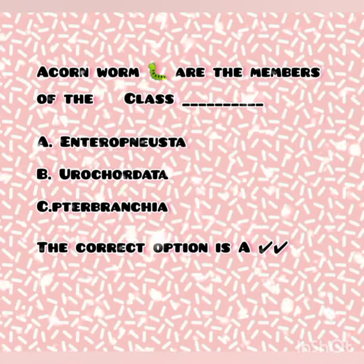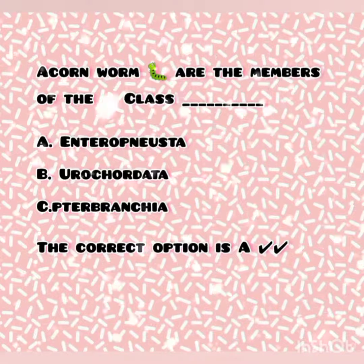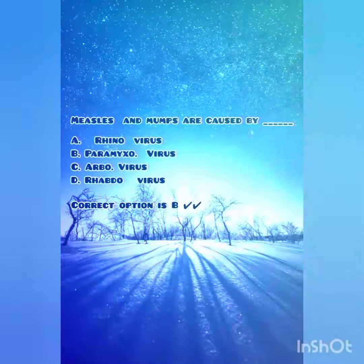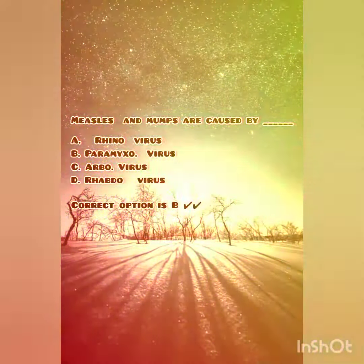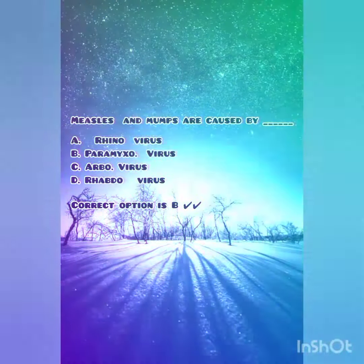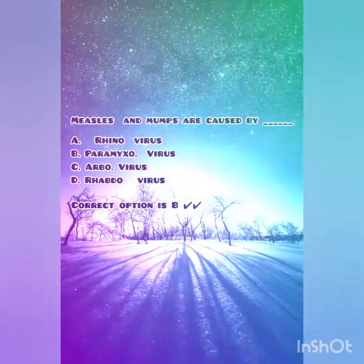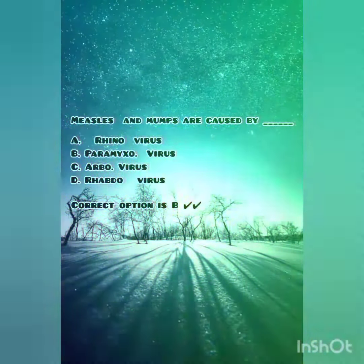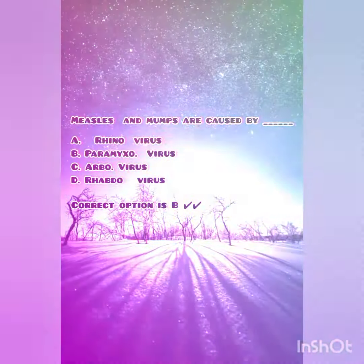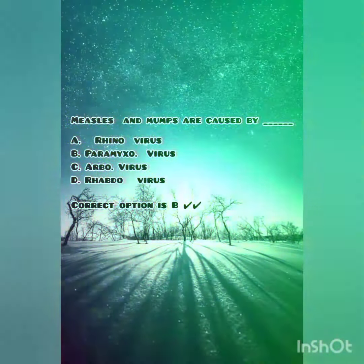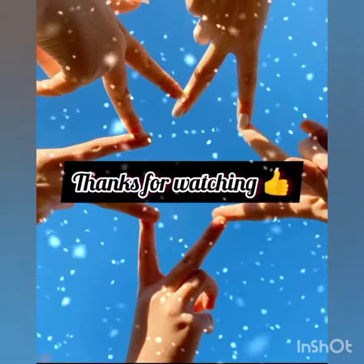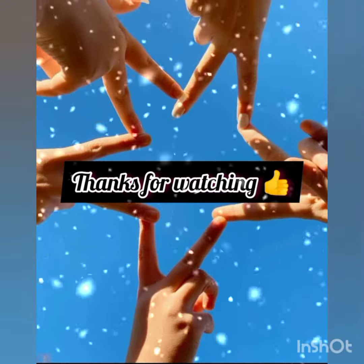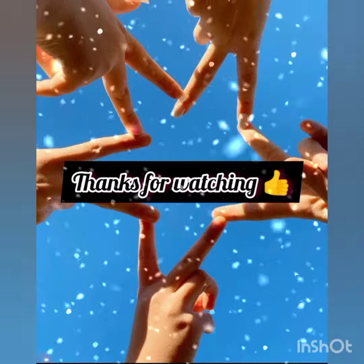Next question: measles and mumps are caused by which virus? The options are rhinovirus, paramyxovirus, arbovirus, and raptovirus. The correct option is B — that is paramyxovirus. This is all about the MCQs. Thanks for watching.